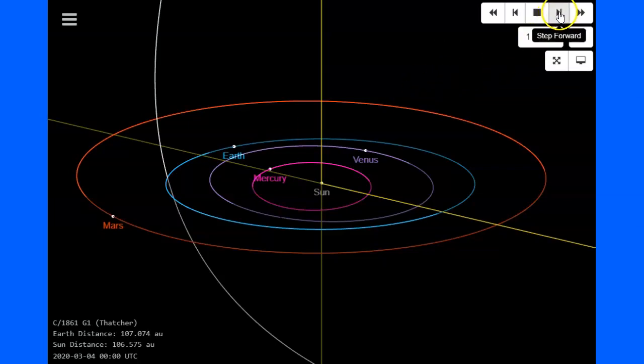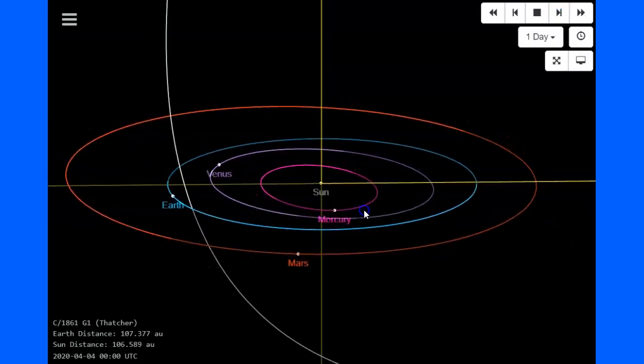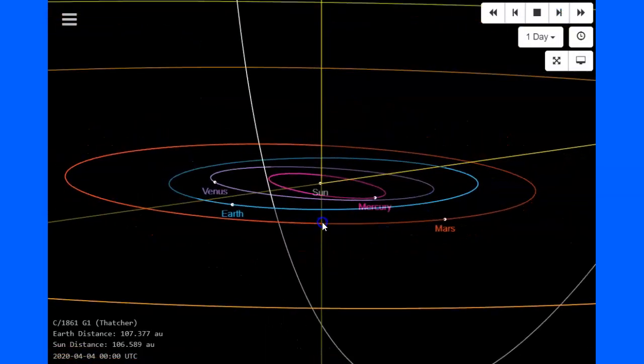But as we step this forward in days, you can see at the bottom we're now to March the 16th. The Earth is approaching that meteor shower path. Let me turn it. We can kind of get a better angle on it right there.